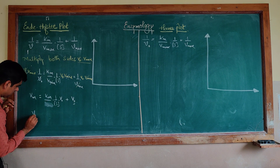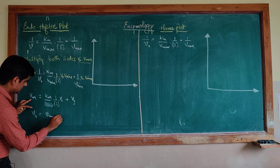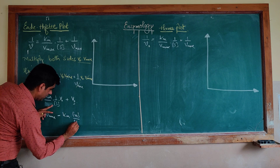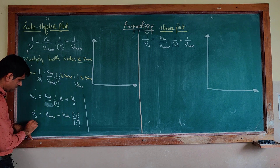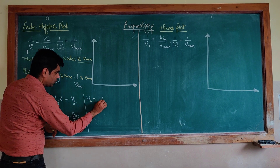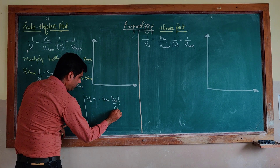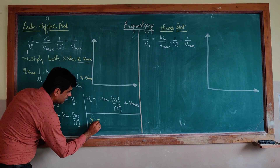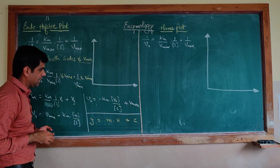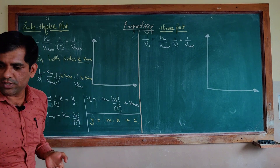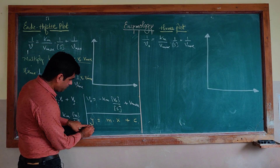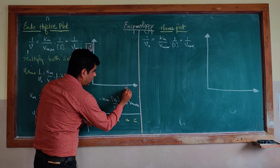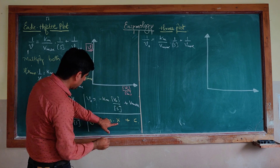Rearranging, we get: V0 = Vmax − Km × (V0/S). This gives us an equation of the form Y = C + MX, which is the equation for plotting the Eadie-Hofstee plot. Here, Y is V0 plotted on the Y-axis, and X is V0/S0 plotted on the X-axis, and the slope is negative.